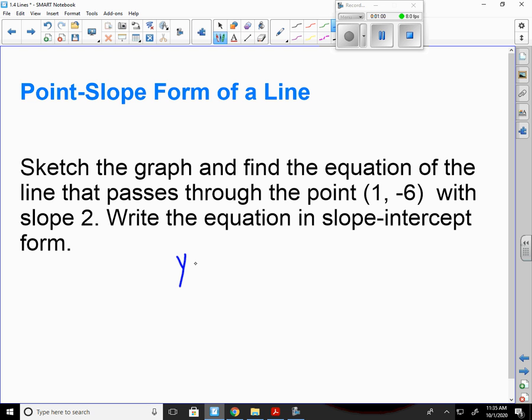So I'm going to do y minus y1 equals m times x minus x1. So that's going to give me y minus a negative 6 equals my slope, which is 2, times x minus 1.